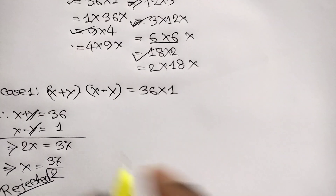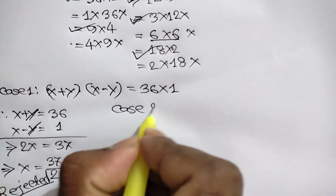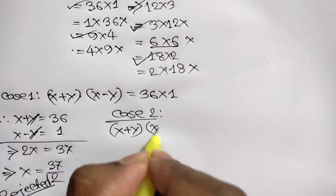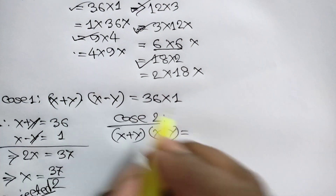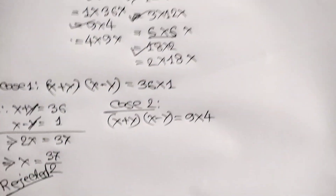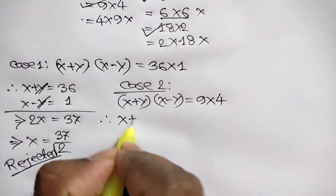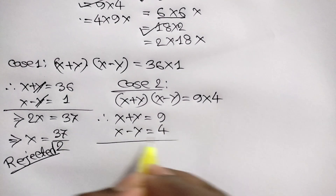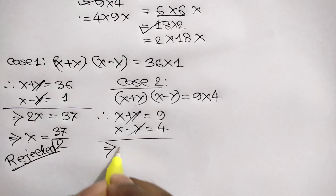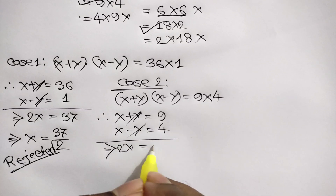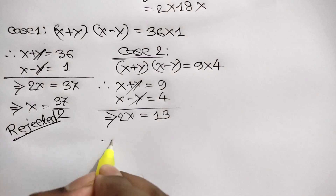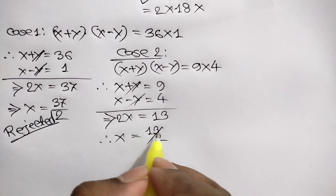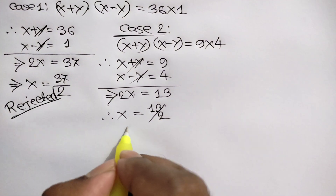Case 2: x plus y times x minus y is equal to 9 times 4. So x plus y is equal to 9 and x minus y is equal to 4. Adding these two equations, we get 2x is equal to 13. Dividing both sides by 2, we get x is equal to 13 over 2, but this is a fractional number, so this case is rejected.